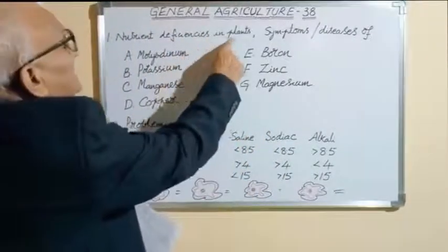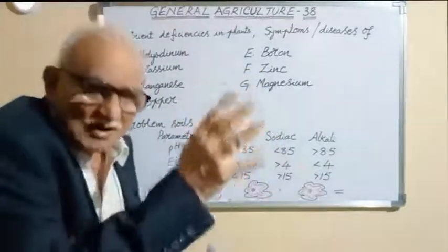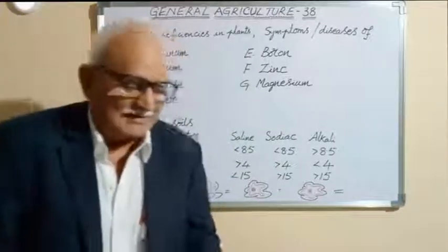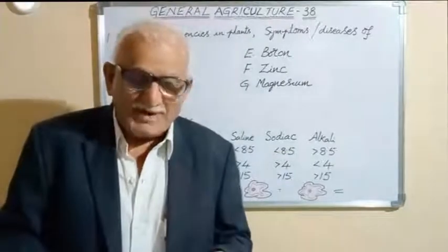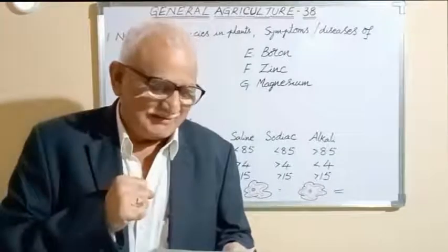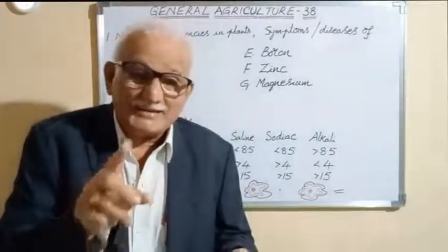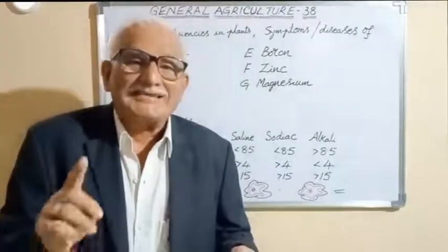Nutrient deficiencies in plants, symptoms or diseases of, first, molybdenum. As far as molybdenum is concerned: whiptail in cauliflower, browning also in cauliflower, downward cupping in radish, yellow spot in citrus.